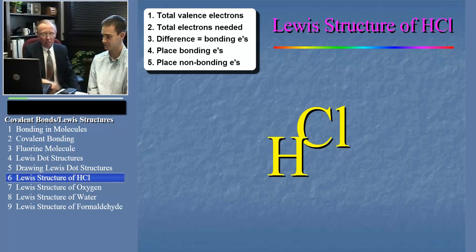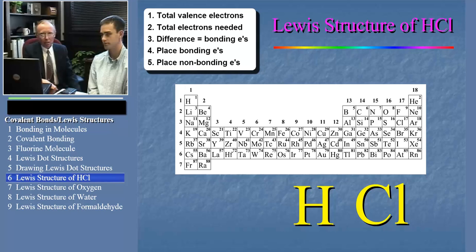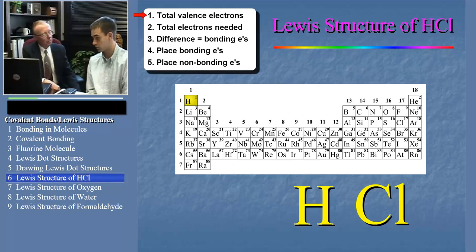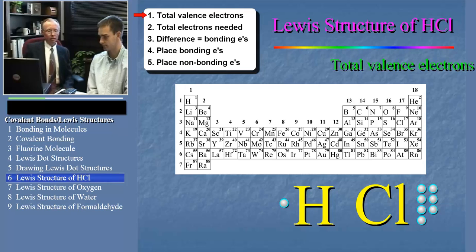Now there are two atoms in HCl. If we look at the periodic table, we can decide how many valence electrons are in the molecule. Bracken, how many does hydrogen bring to the table? Hydrogen has one valence electron. And chlorine? Chlorine has seven electrons. Okay. So the total number of valence electrons available is how many? Is eight. Alright.